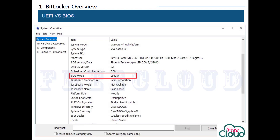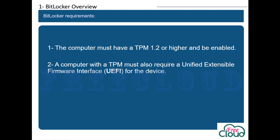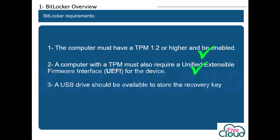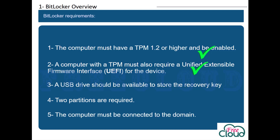Now let's go back to the BitLocker requirements. We talked about the required TPM version and the difference between UEFI and legacy BIOS. A USB drive or other external media should be available to store the recovery key if you will use TPM with the USB scenario or USB only. Two partitions are required to run BitLocker, because pre-startup authentication and system integrity verification must occur on a separate partition from the encrypted operating system drive. The computer must also be connected to the domain in order to store the recovery key in Active Directory.